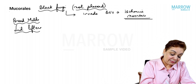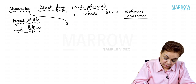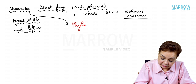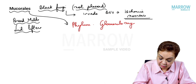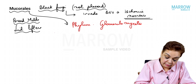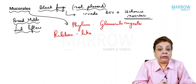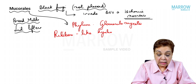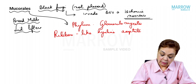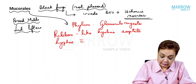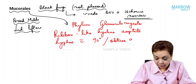Mucorales belong to the phylum Glomerulomycetes. Their morphology: they form broad, ribbon-like hyphae.